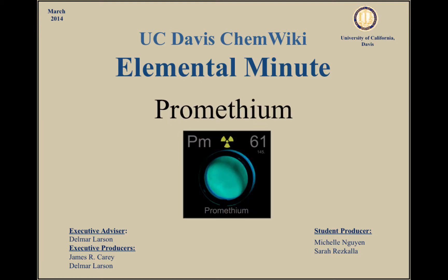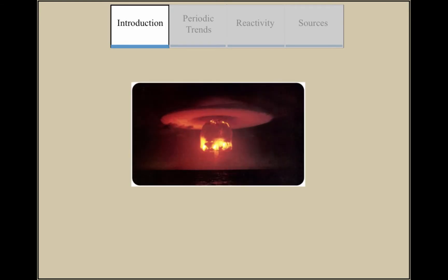Prometheum is named after the Greek god Prometheus. It is an artificial element that was found in the byproducts of uranium fission.